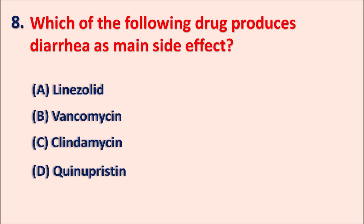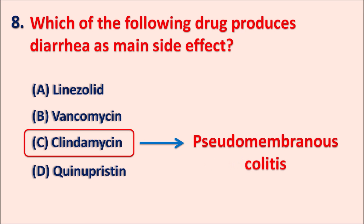The right answer is clindamycin. As covered in part one, clindamycin is a drug that can produce pseudomembranous colitis because clindamycin is ineffective against Clostridium difficile infections. When this drug is given, Clostridium difficile infection increases, resulting in pseudomembranous colitis leading to diarrhea. So diarrhea is one of the important side effects of clindamycin.